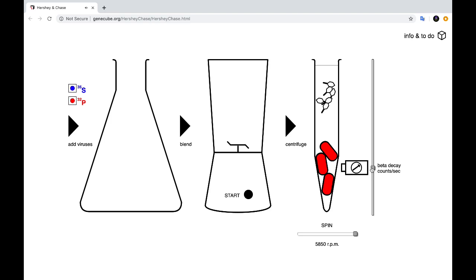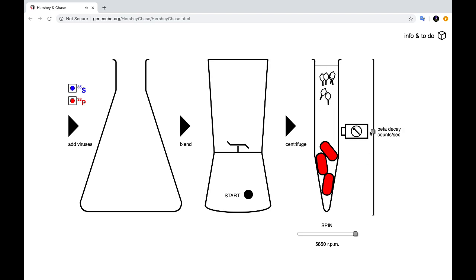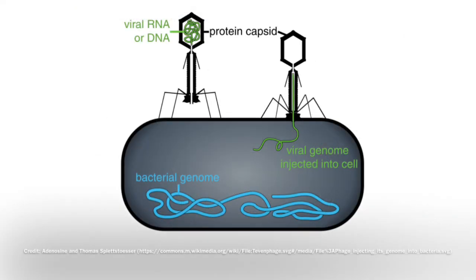But if you move down to the bacteria, you will see there is a high degree of radioactivity being detected here indicating that the ³²P was transferred into the bacterium. So as a result of detecting the ³²P being transferred into the bacterium and knowing that the phosphorus is found in DNA, Hershey and Chase were able to determine that DNA is in fact the genetic material and not proteins.